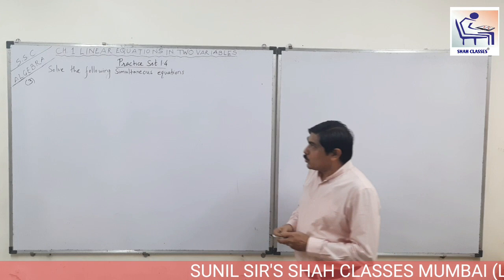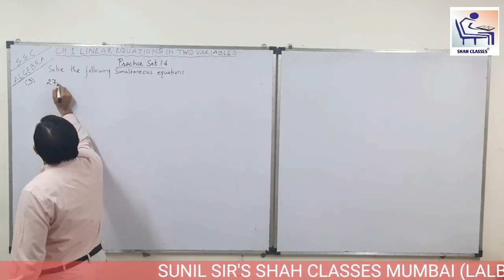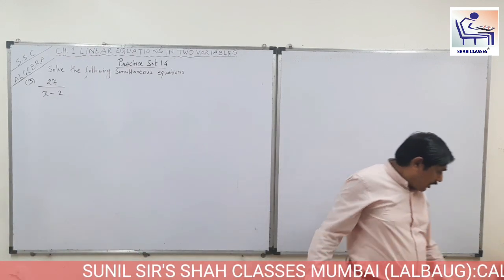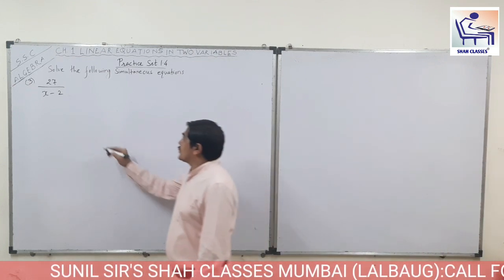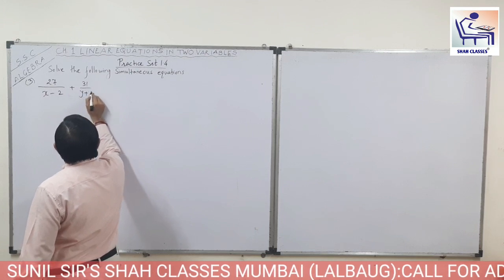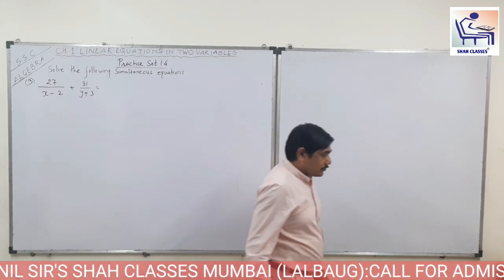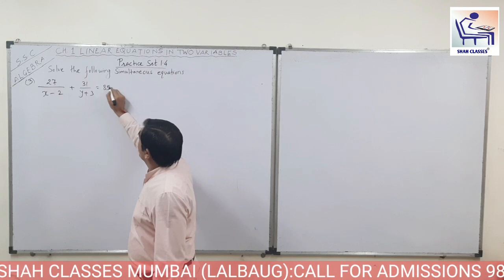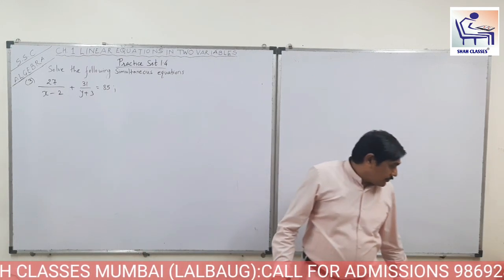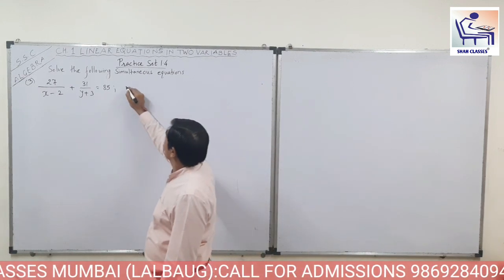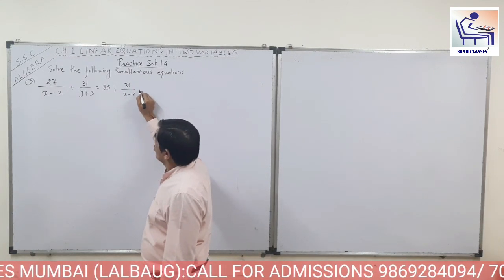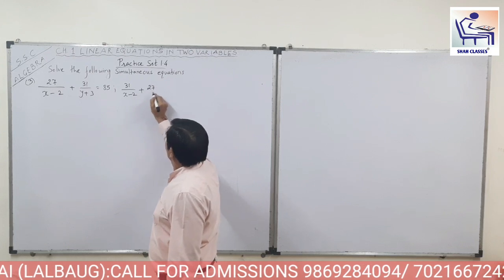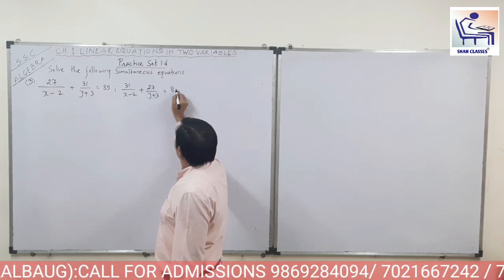Question number 3: 27 upon (x minus 2) plus 31 upon (y plus 3) is equal to 85. This is the first equation. And the second equation is 31 upon (x minus 2) plus 27 upon (y plus 3) is equal to 89.